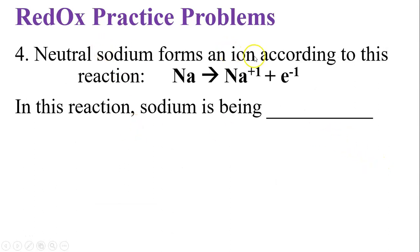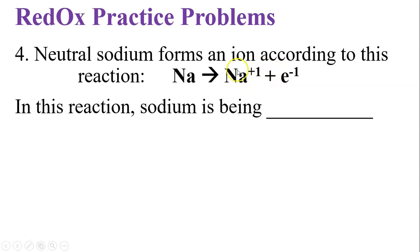Neutral sodium loses one valence electron, giving it a full valence shell underneath, and forms the Na⁺ ion. When it loses an electron, it is oxidized — that's OIL: oxidation is loss. Sodium is oxidized because it loses an electron to become a positive ion.